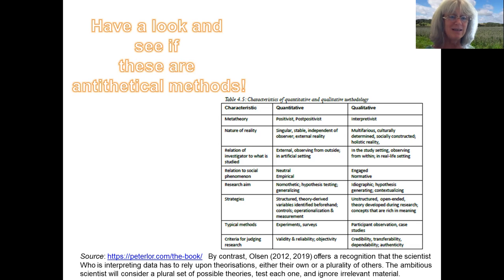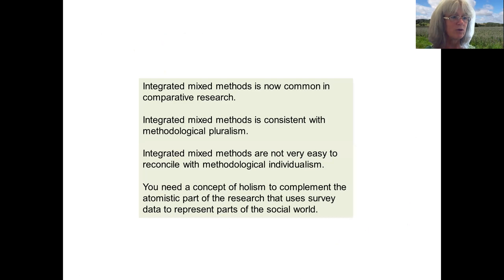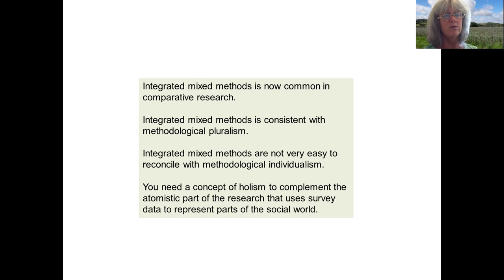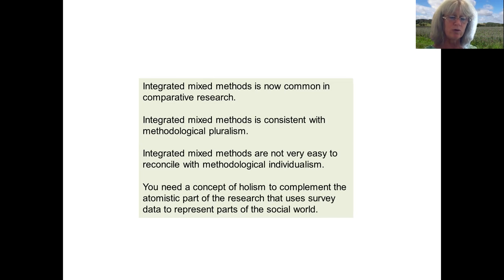I want you to continue through this list and think for yourself: is there a schism or not? If there is a schism, do you agree to continue promoting it, or would you like to overcome it? In comparative research there are a lot of people now using mixed methods and saying there is no schism — or if there is, it's problematic and needs to be overcome. The answer I would give is that we can use integrated mixed methods, which is common now in comparative research. Integrated mixed methods is consistent with pluralism, particularly methodological pluralism, where you combine methods from those two approaches. You don't use all the methods at the same time, but you can combine them. We can think about atomism versus holism and how to bring in a bit of holism.